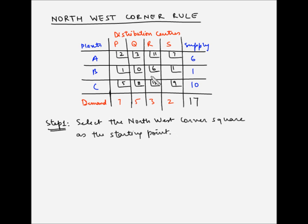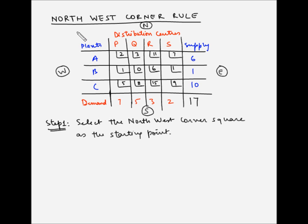As we do for any map, this would be the north direction, this would be the south, this would be east, and this would be west. So in this case, northwest will be here. So the northwest corner square is the square AP.